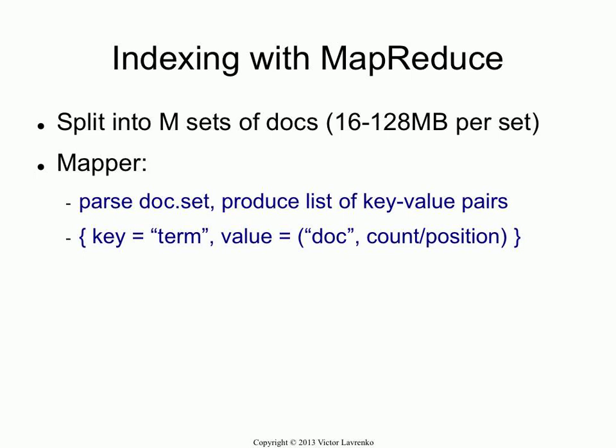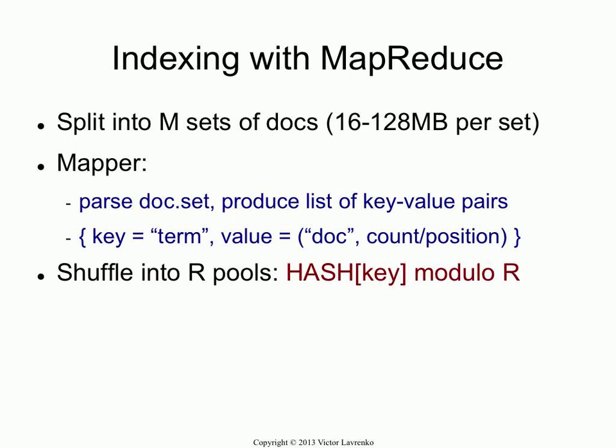So that's all the mapper does — it doesn't actually do any indexing. What it does is tokenization, and then it throws these pairs out. Imagine sort of throwing them into thin air, and then the MapReduce architecture is going to grab them and do something with them. The job of the mapper is really, really simple.